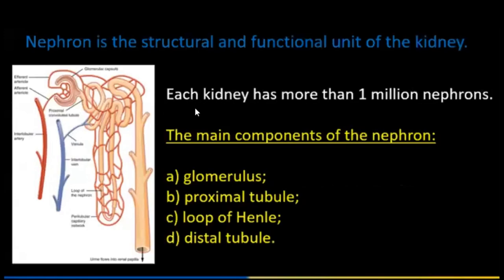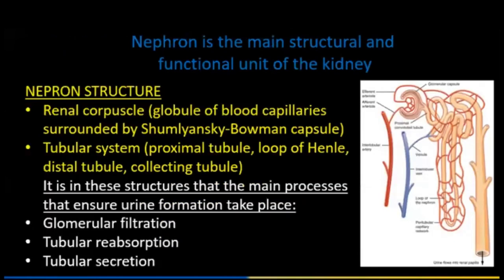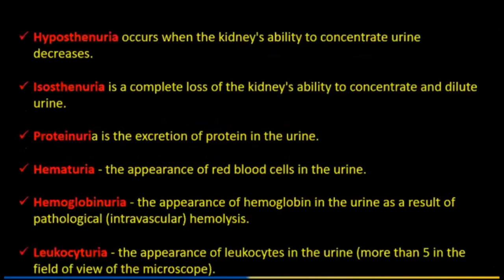Each kidney has more than one million nephrons. The main components of a nephron are the glomerulus, proximal tubule, loop of Henle, and distal tubule. The nephron is the structural and functional unit of the kidney, with a renal corpuscular tubular system. The main processes ensuring urine formation are glomerular filtration, tubular reabsorption, and tubular secretion.